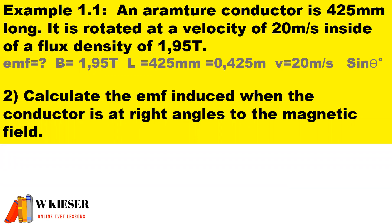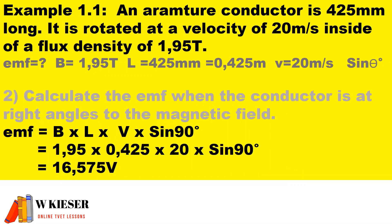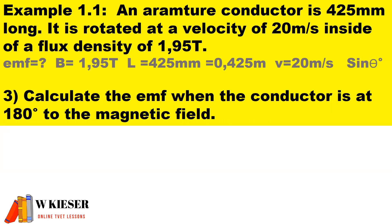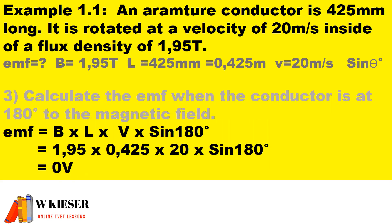Part two: calculate the EMF induced when the conductor is at right angles to the magnetic field. At 90 degrees or 270 degrees, maximum EMF is produced. Substituting 90 degrees into sine theta, multiplied by the flux density, length, and velocity gives a maximum EMF of 16.575 volts. Part three: at 180 degrees, no EMF is induced. Substituting 180 degrees into sine theta multiplied by flux density, length, and velocity confirms zero EMF is produced.